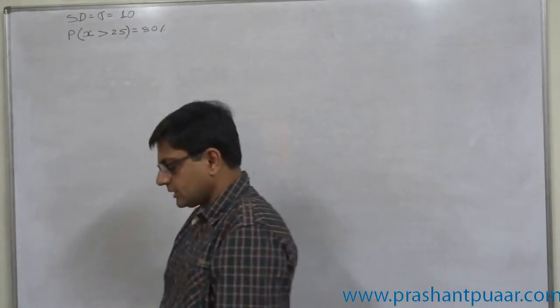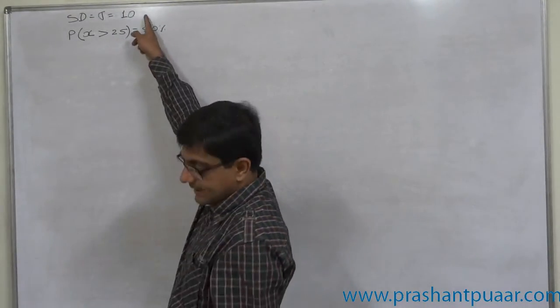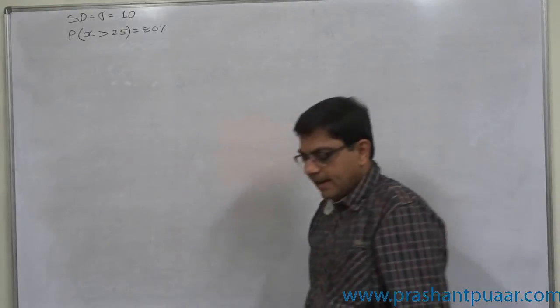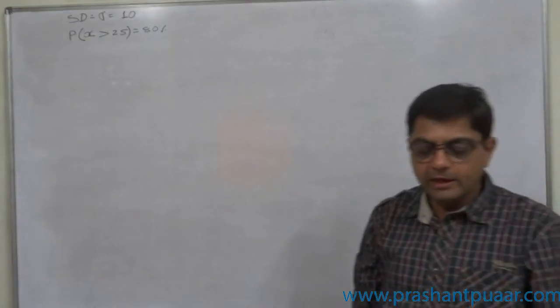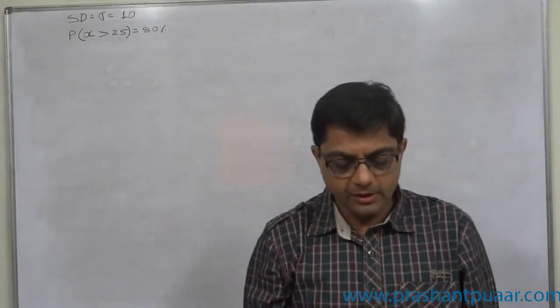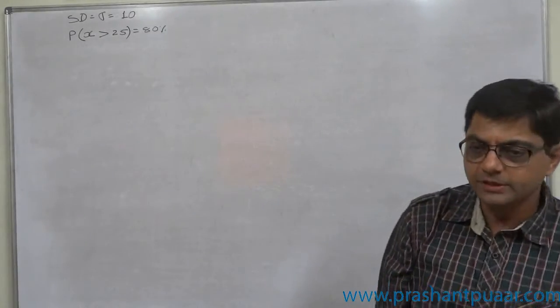For a normal distribution, the standard deviation is 10 and 80% of the values are greater than 25. Then find the mean of the distribution.